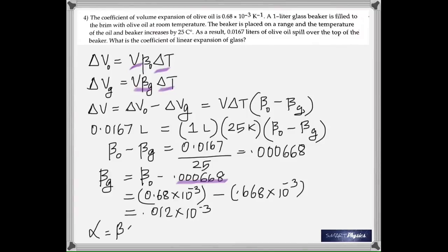Remember that alpha (linear expansivity) is one third of beta (cubical expansivity). Using this relationship, the linear expansivity of glass works out to 4 × 10⁻⁶ per Kelvin.